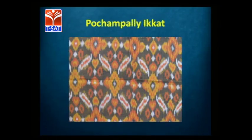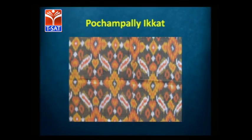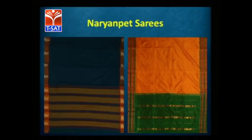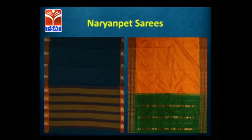Moving on to other textiles: Pochampalli is very important for Ikat. There is also Narayanpet, which has very beautiful saris in both silk and cotton. Narayanpet's saris are famous for their borders, particularly the zari border and the vibrant colors.